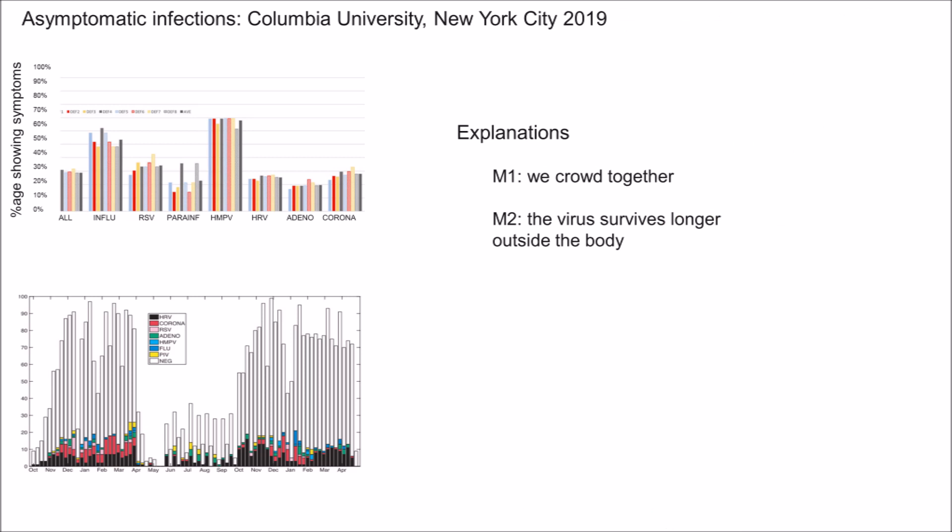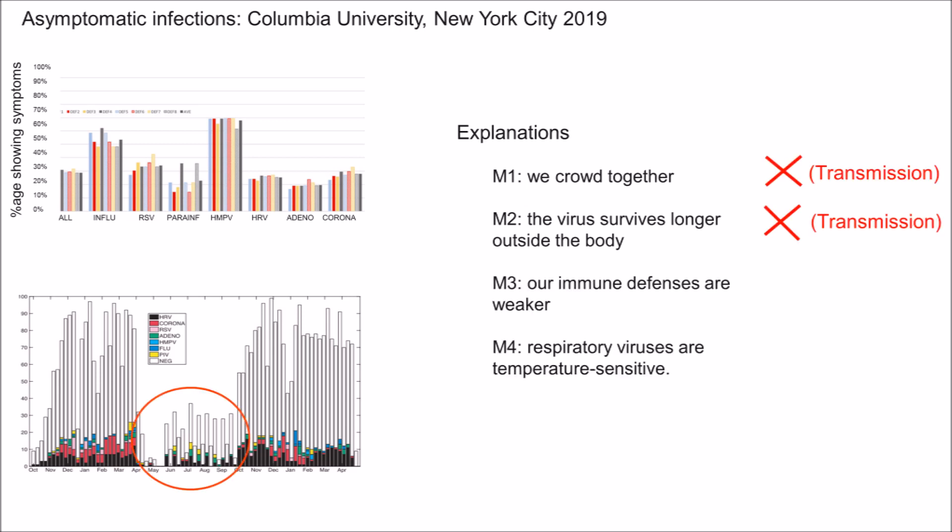Other explanations for viral seasonality have been proposed. Two popular explanations are that we crowd together more in winter and that respiratory viruses can survive for longer outside the body in winter. The data from Columbia University and the Netherlands example suggest these are not the main drivers of seasonality — though I'm not saying they have no effect on the progress of epidemics. I think the evidence suggests that the natural temperature sensitivity of virtually all respiratory viruses is the main driver, with a smaller contribution from changes in our immune defences during winter and when we're chilled.